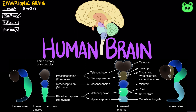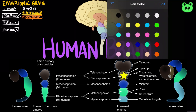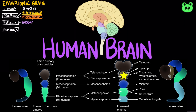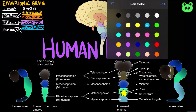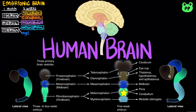The forebrain develops into telencephalon and diencephalon, the midbrain develops into mesencephalon, and the hindbrain develops into metencephalon and myelencephalon.